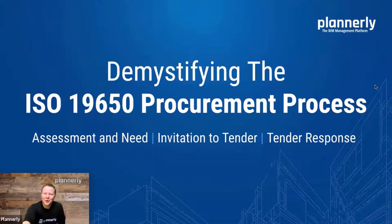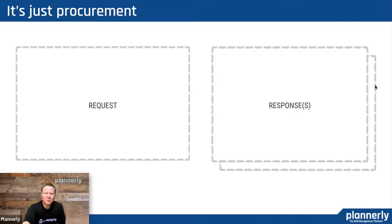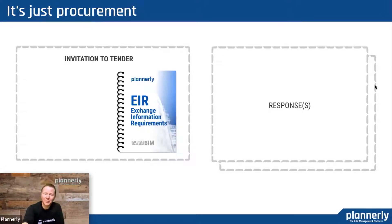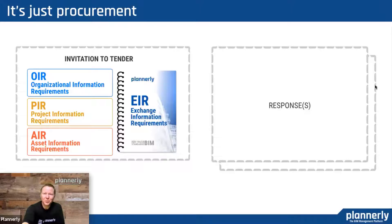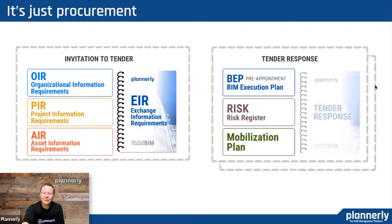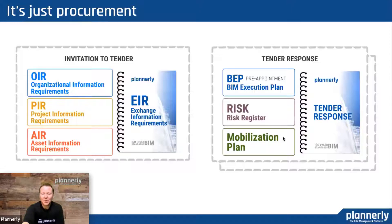Let's look at the workflow and try to demystify this concept — it's not really that we are doing anything different. This is something we've done for a long time. It's just procurement: we have a request and then we have responses, and one of those responses is selected. The request is simply called an invitation to tender, and the main concept is a set of exchange information requirements. The response is called a tender response — formulated from a BIM execution plan, which is a pre-appointment plan answering the questions from the tender, along with risk register and mobilization planning.